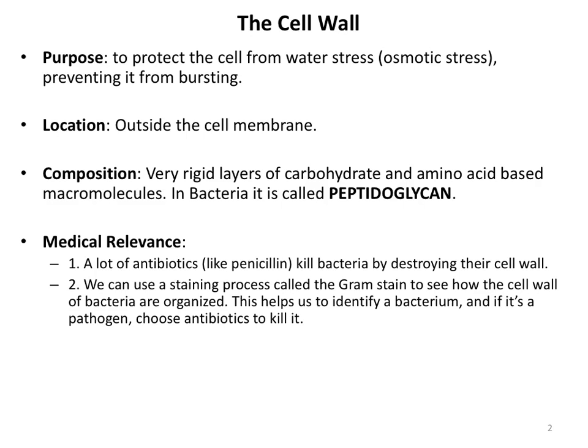The purpose of the cell wall is to protect cells from water stress, otherwise known as osmotic stress. In other words, the cell wall is what protects the cell from bursting. Typically, the interior of a cell is fairly salty, and when found in a more watery environment, those are conditions that favor the movement of water by osmosis into the cell, and if that is unchecked, the cell will burst. Luckily, the cell wall is there in all bacterial cells to prevent this from happening.